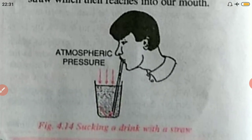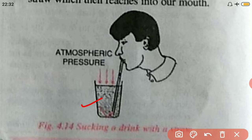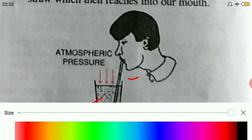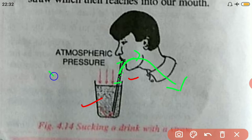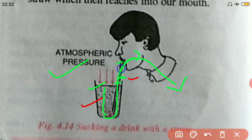To understand this: initially when a straw is immersed in a drink, the portion of the straw above the liquid is empty. When you suck in, you first draw the air from that portion of the straw. The air goes into your mouth or lungs, so the atmospheric pressure acting on the surface of the soft drink wins over the pressure inside the straw, pushing the drink up into the straw and into your mouth.